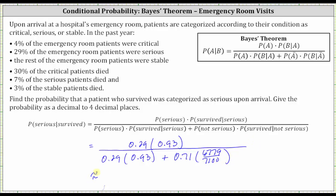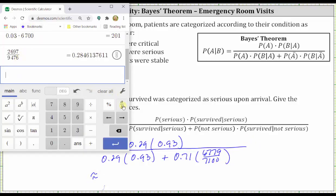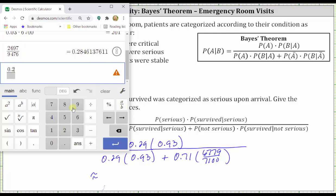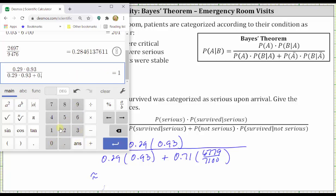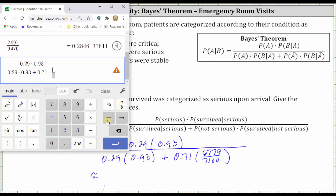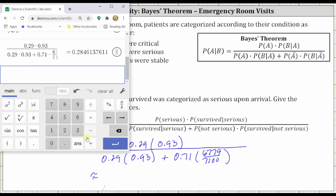Now we go to the calculator using the fraction format key. In the numerator we have 0.29 times 0.93. In the denominator we have 0.29 times 0.93, plus 0.71 times the fraction 6,779 over 7,100. We get the same result of 0.2846 to four decimal places.